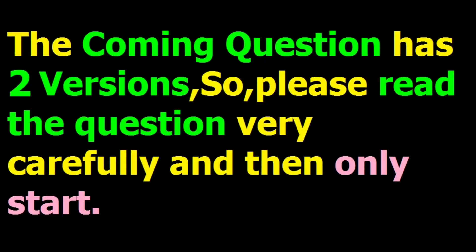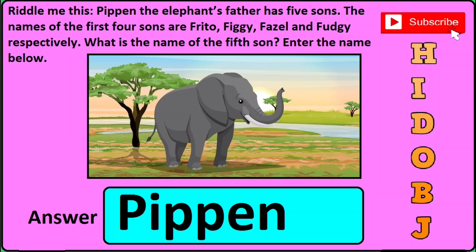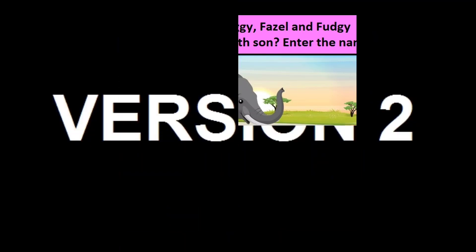Now this question number six has got two different versions or types, so you need to read the question and just type the answer that I will be showing here in the answer box. For example, in version one of this question, it is asked: the elephant's father has five sons — if you find the image of an elephant, then the correct answer will be Pippen, P-I-P-P-E-N, so just type Pippen as I have typed here.